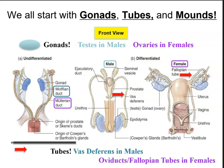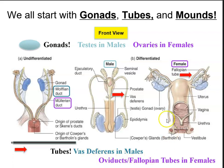In males, we have the vas deferens, which allows for transport of the male gametes — specifically sperm — into the ejaculatory duct. For the ducts in females, we have the oviducts, also known as the fallopian tubes, which allow passageway of the female gamete, the ovum or egg.